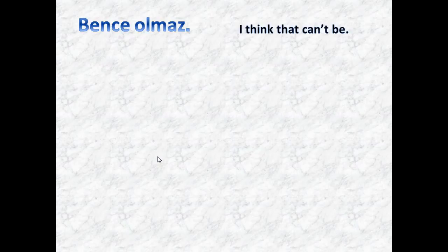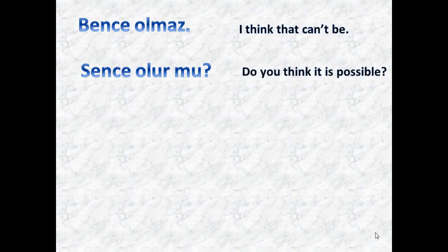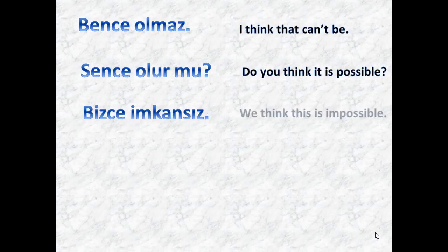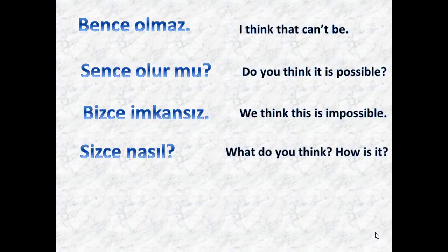'Bence olmaz' means 'I think that can't be' — whatever the matter is, it means 'that's not possible' or 'that will not happen.' 'Sence olabilir mi?' means 'do you think it is possible?' or 'do you think it may happen?' 'Bizce imkânsız' means 'we think this is impossible.' 'Sizce nasıl?' means 'what do you think?' or 'how do you find it?' When someone says 'sizce nasıl,' they want your detailed opinion. 'Bence güzel' means 'I think it's nice.'